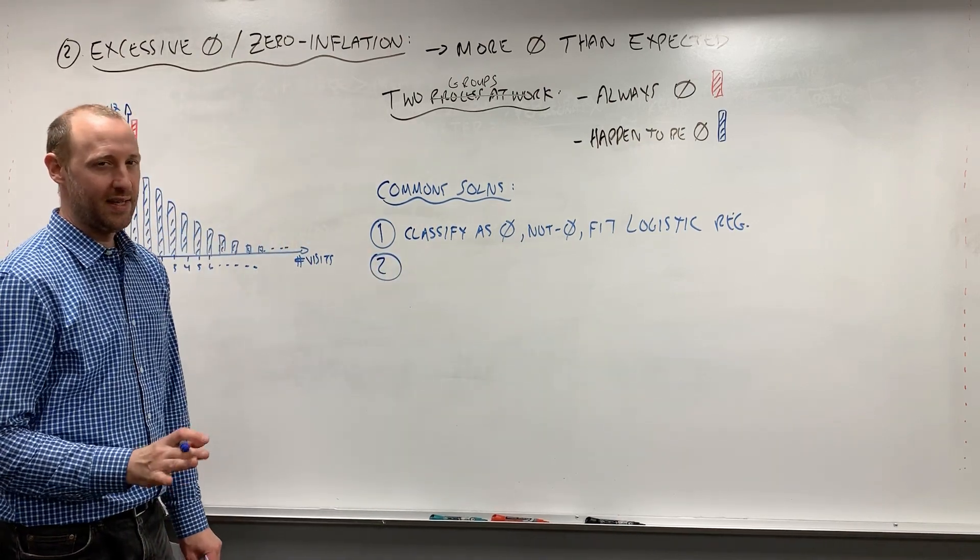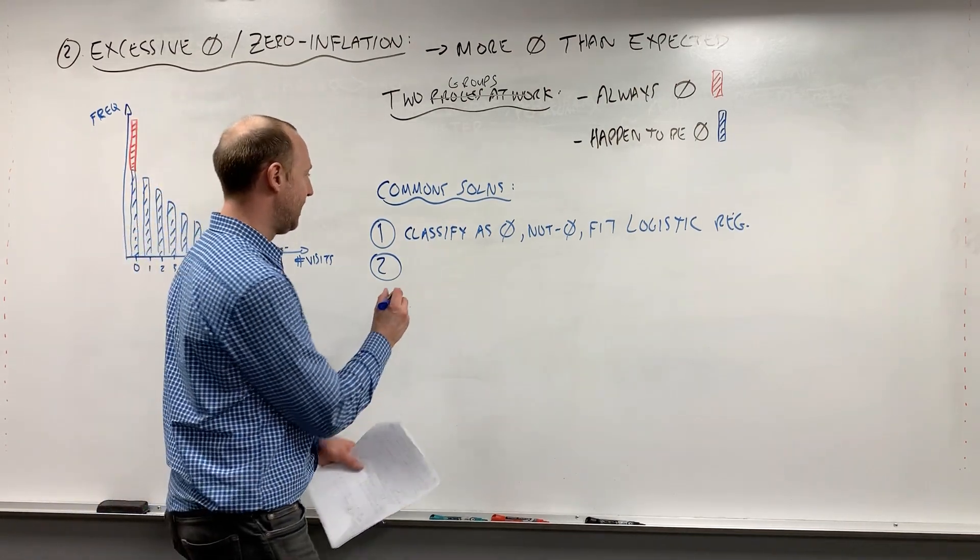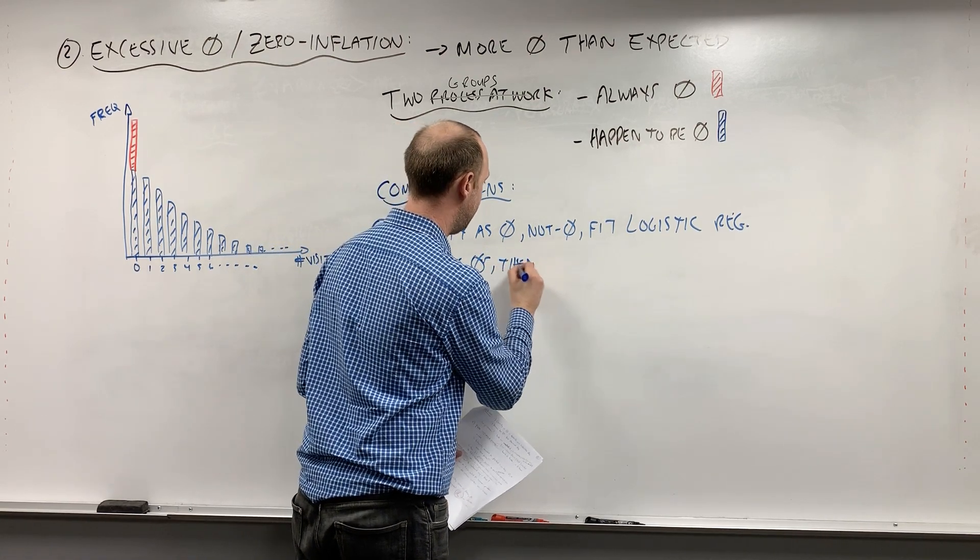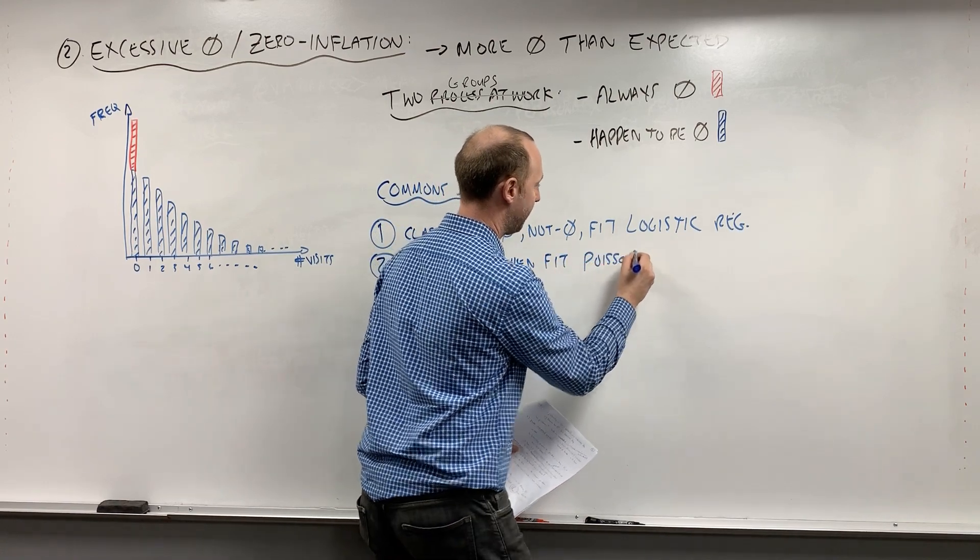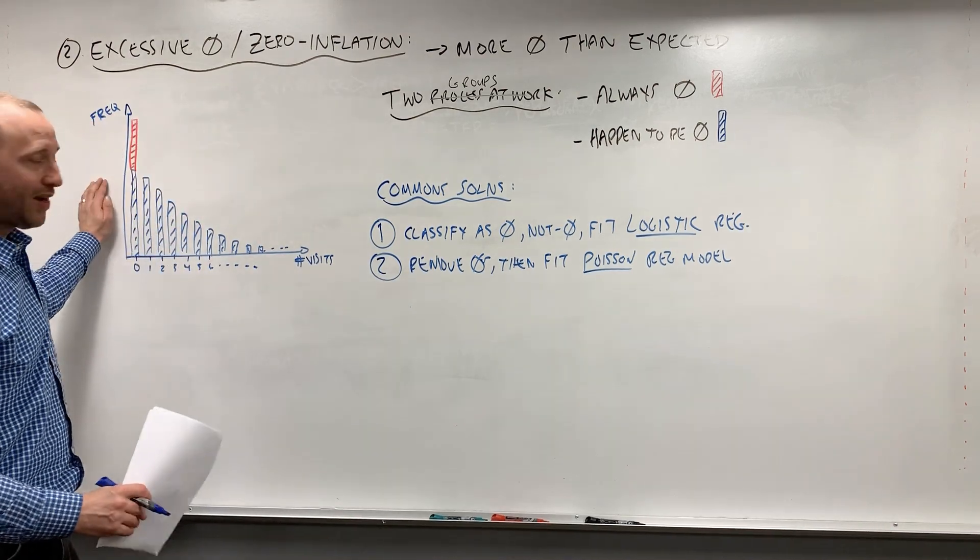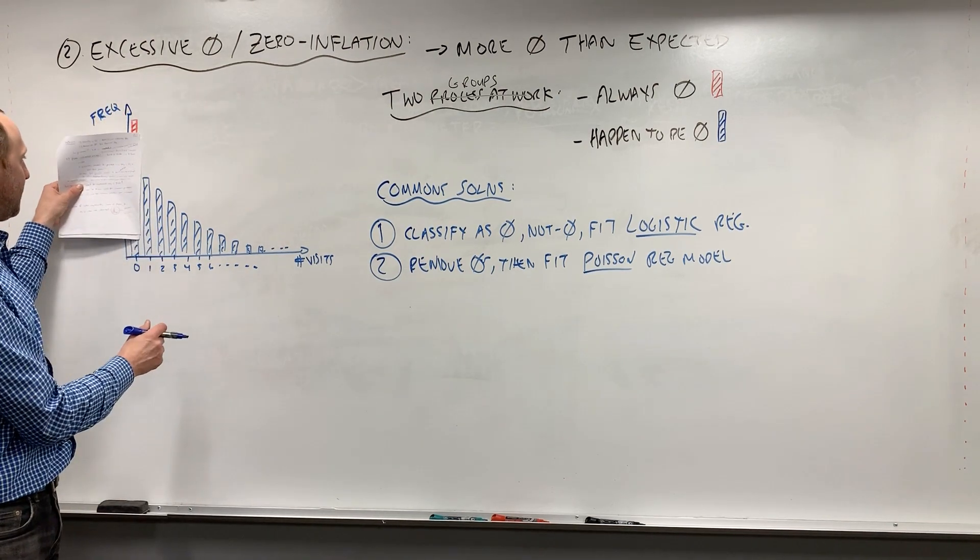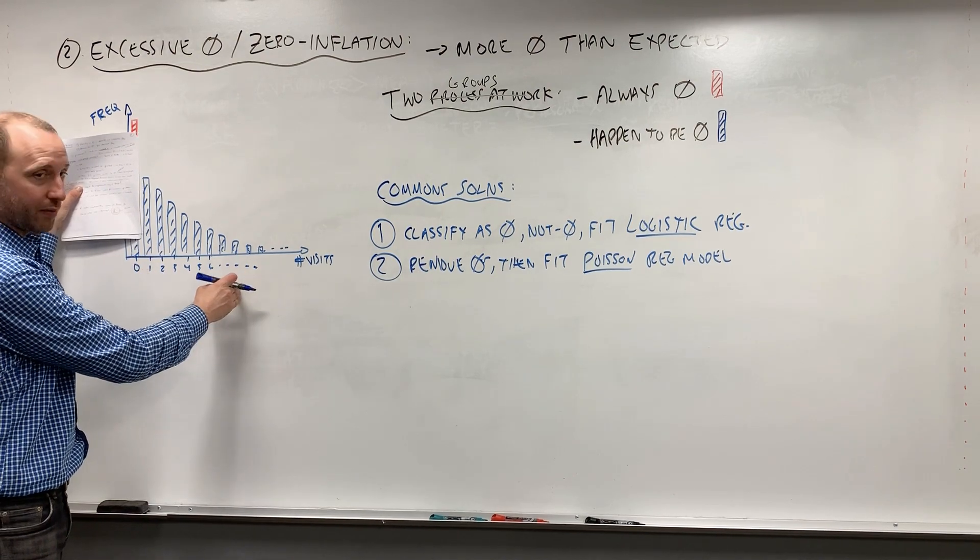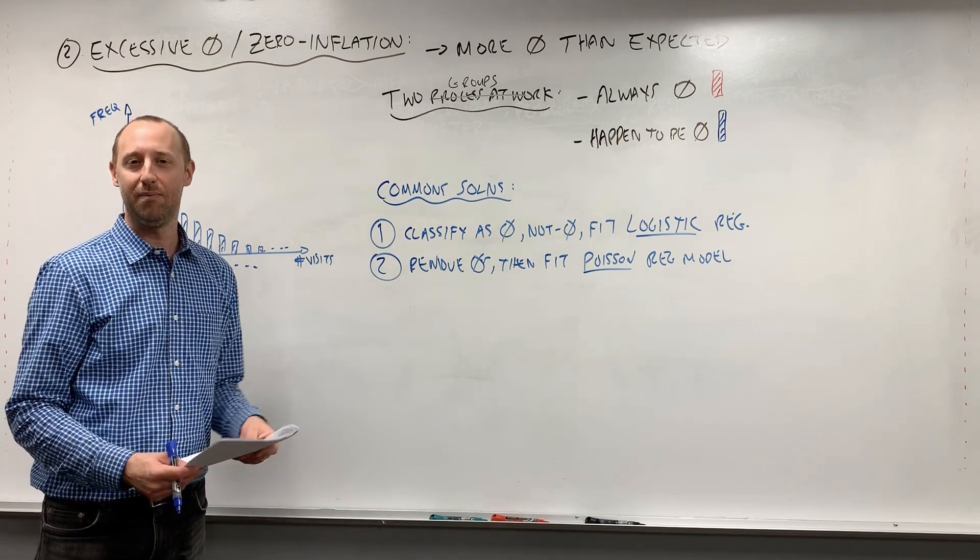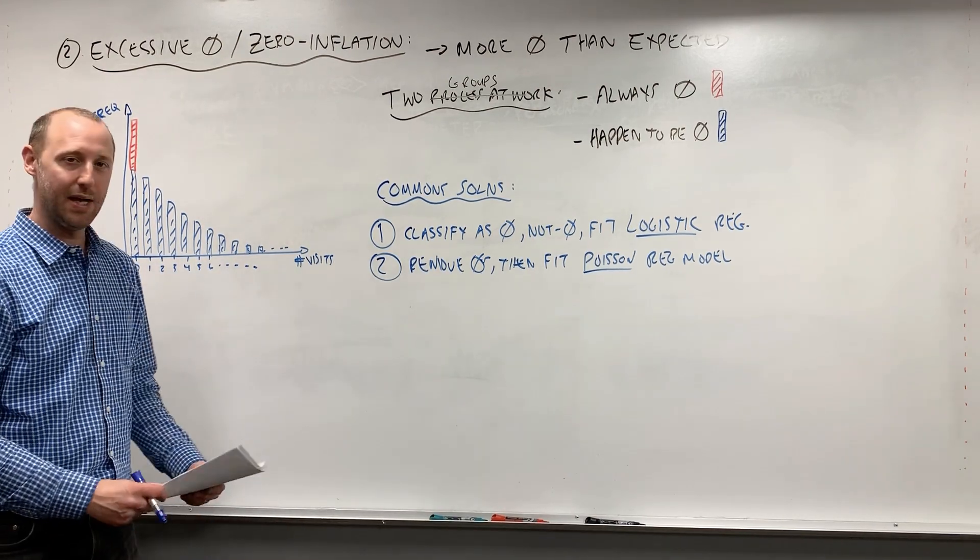So a second solution, again, less than optimal. In some cases it can work, but we'll talk about why it's not always a great approach. You can remove the zeros, then fit a Poisson regression model. So the idea here, if you have way too many zeros that just the theory for the Poisson regression is falling apart, you can just remove all these zeros, get them out of the data set, fit a Poisson regression model to what remains. Again, this might work in certain circumstances, but you can imagine if your goal is really to estimate what is the average number of visits per year for different people, this is not going to help you with that because you're going to remove all the zeros, right? You're going to be removing an important part of the data.